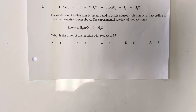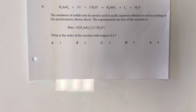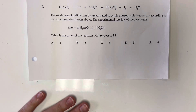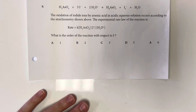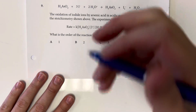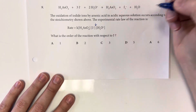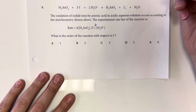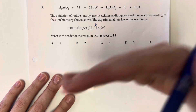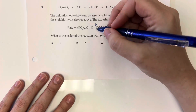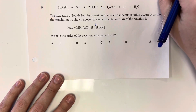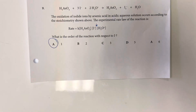The reaction of iodine ions and arsenic acid in an acidic aqueous solution occurs according to the stoichiometry shown above. The experimental rate law is given. The order of the reaction with respect to I is determined by looking for the exponent on the concentration of iodine. Since iodine appears in the rate law with no explicit exponent shown, that implies an exponent of 1, meaning this is a first-order reaction with respect to iodine.